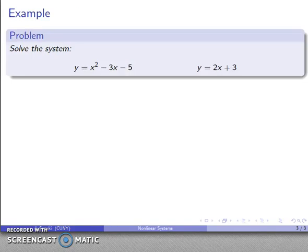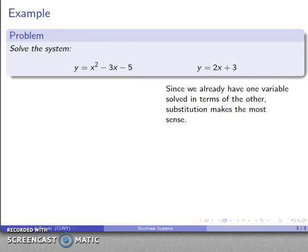So let's take a nice simple nonlinear system. y equals x squared minus 3x minus 5, y equals 2x plus 3. Again, nonlinear because we have an x raised to the second power. And well, conveniently we already have one variable solved in terms of the other, and so that means substitution makes a lot of sense as a way of trying to solve this system.